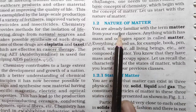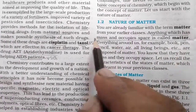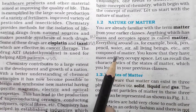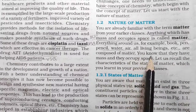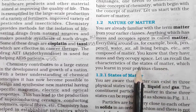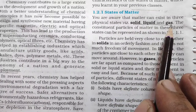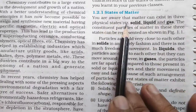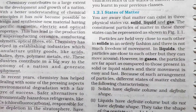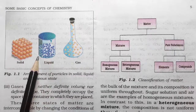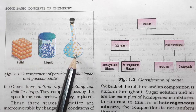You are already familiar with the term matter from earlier classes. Anything that has mass and occupies space is called matter - this is our third definition in this chapter. Everything around us - books, pens, pencils, water, air, all living beings - are composed of matter. Matter exists in three physical states: solid, liquid, and gas. As shown in figure 1.1, in solids the molecules are closely packed, in liquids they are loosely packed, and in gases the intermolecular distance is maximum.